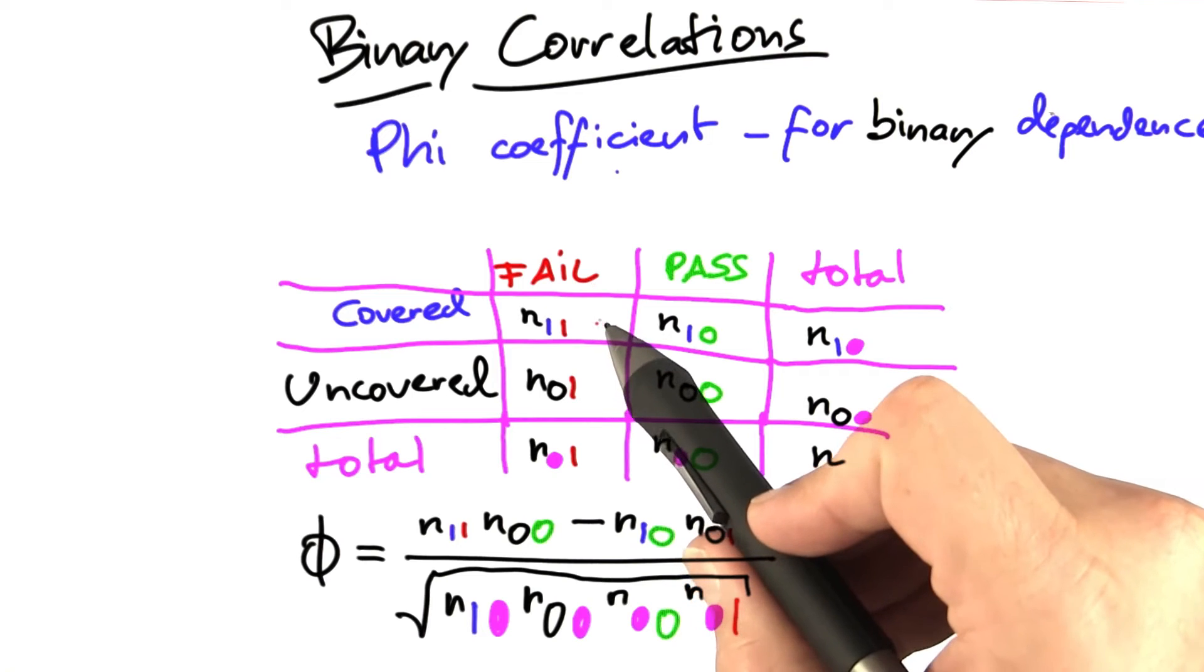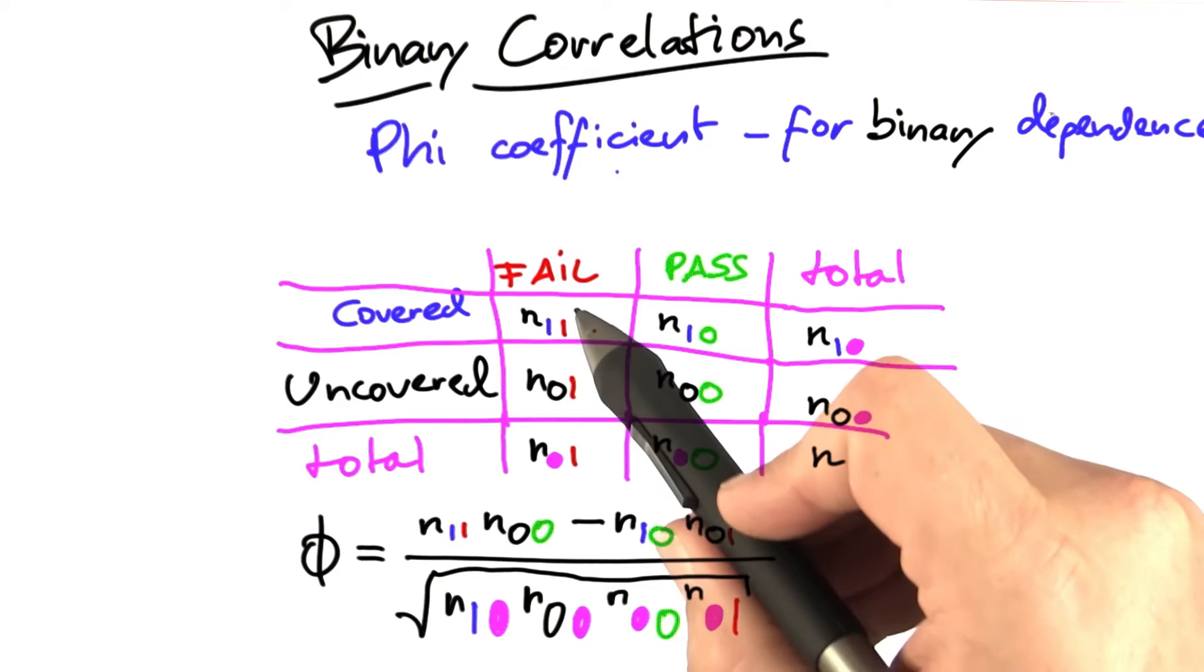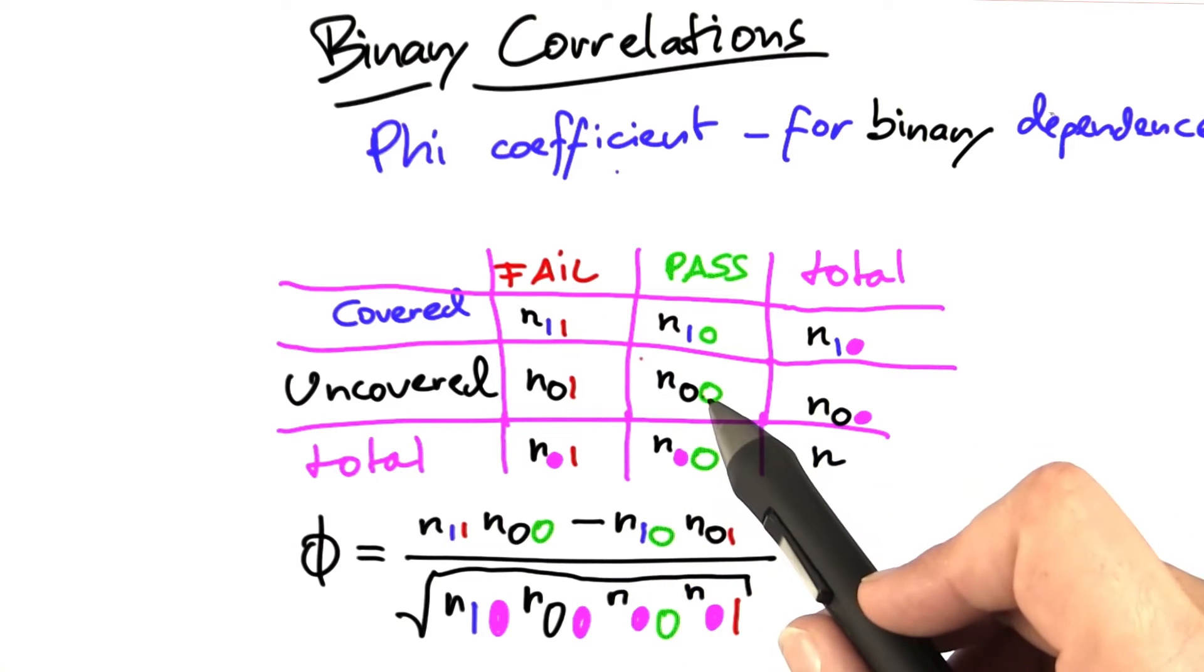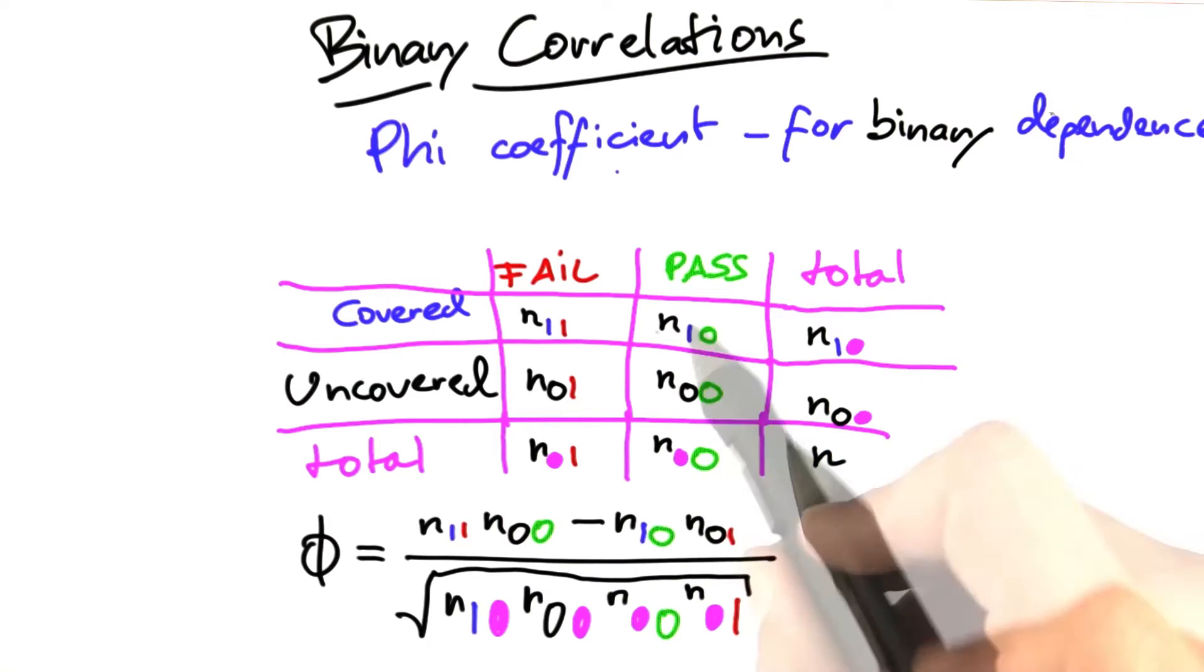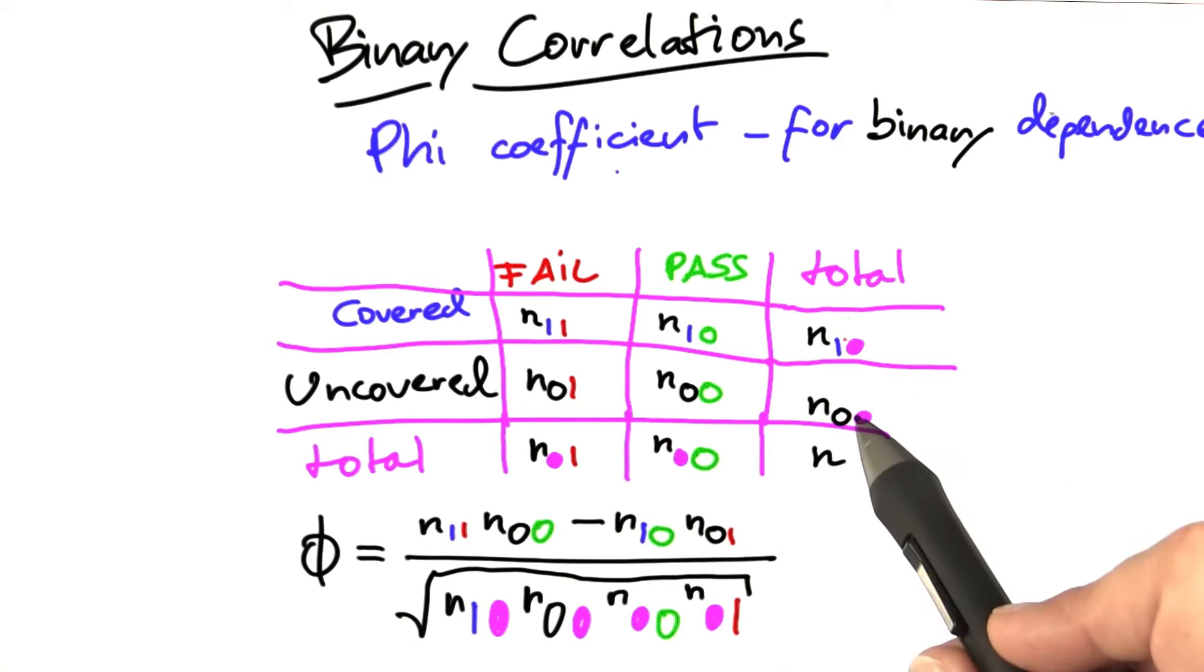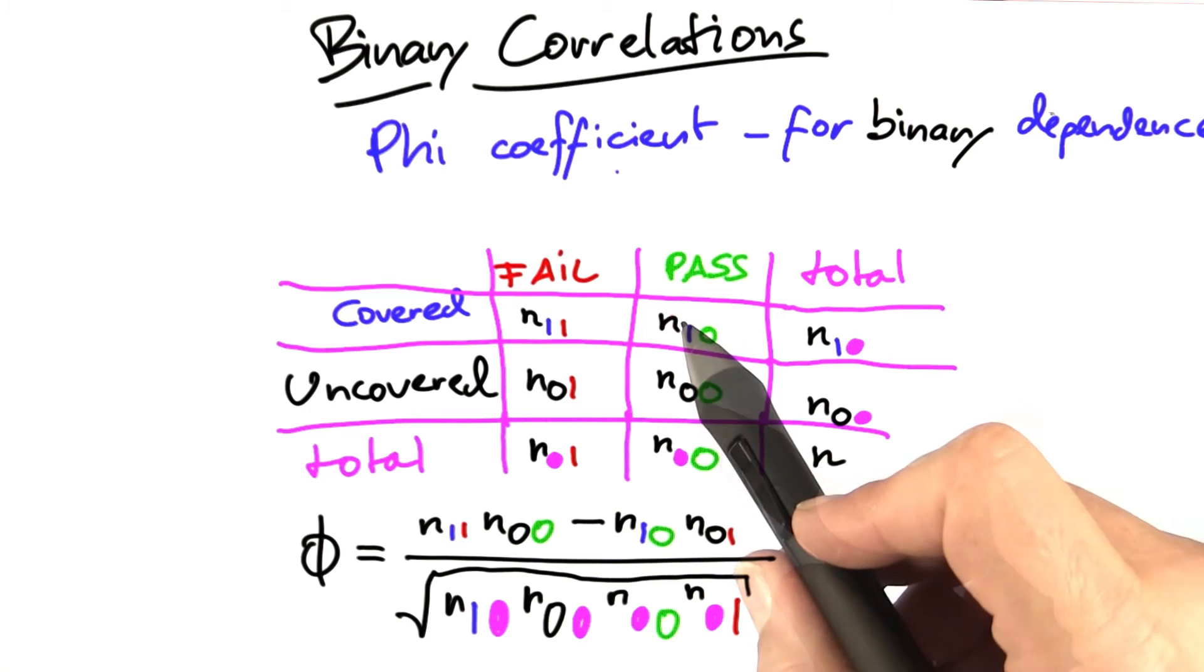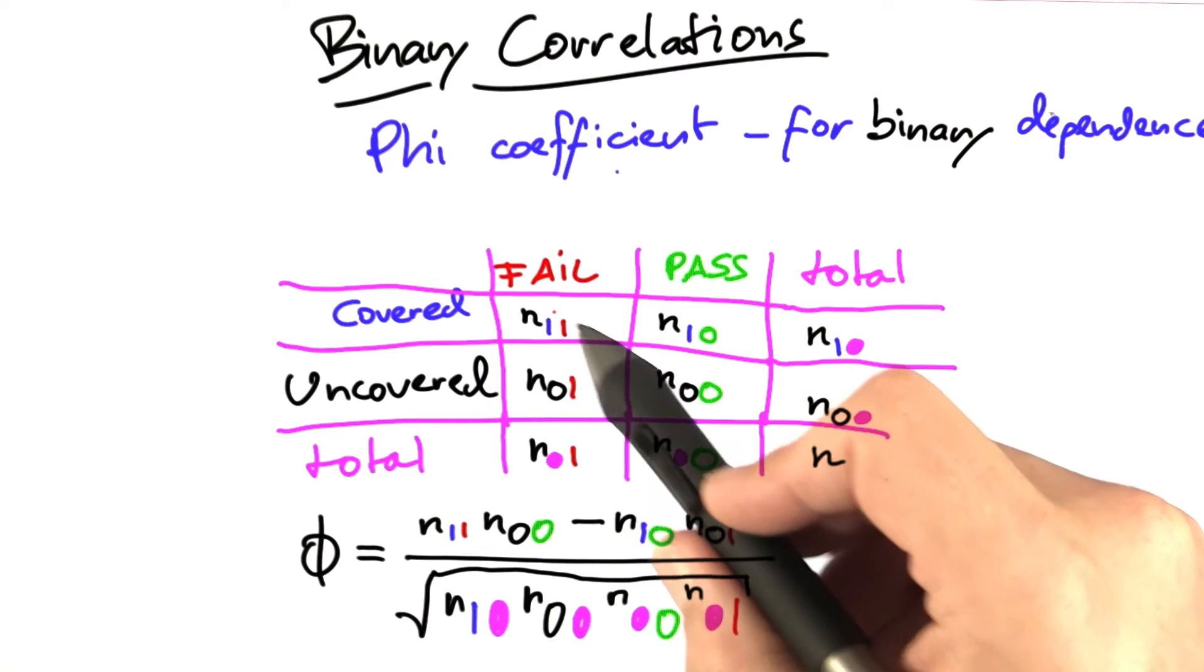This then is the phi coefficient. It consists of multiplying the values in the first diagonal, and subtracting the product of the second diagonal. This is then normalized according to the square root of the sums over the columns and rows. The phi coefficient is high if one diagonal has a high value, and the other diagonal has a low value.